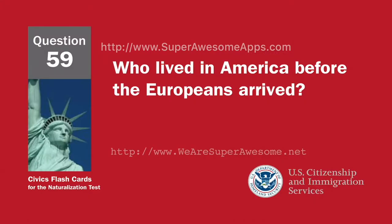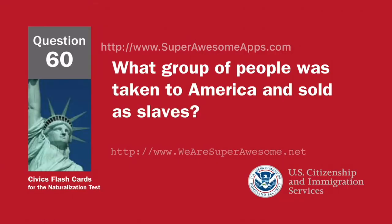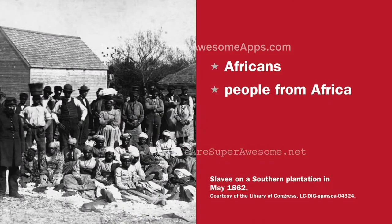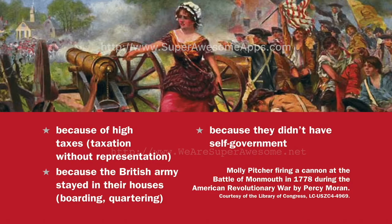Who lived in America before the Europeans arrived? American Indians. Native Americans. What group of people was taken to America and sold as slaves? Africans. People from Africa. Why did the colonists fight the British? Because of high taxes. Taxation without representation. Because the British army stayed in their houses — boarding, quartering. Because they didn't have self-government.